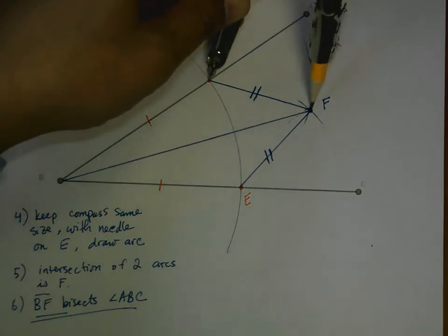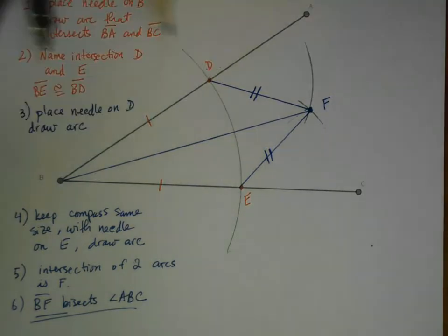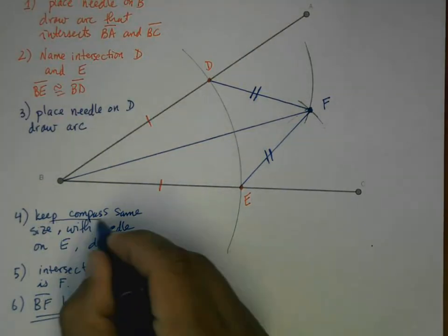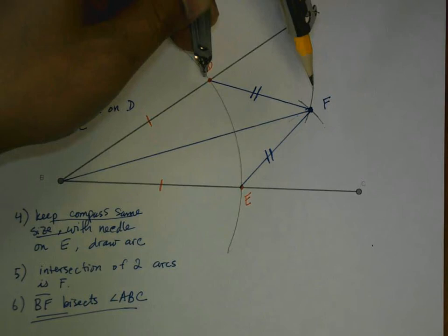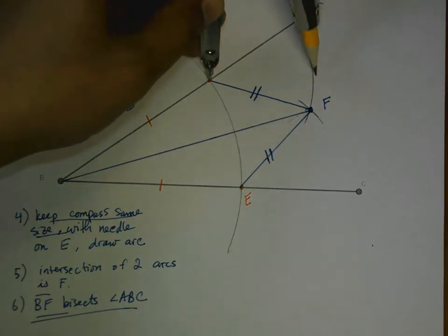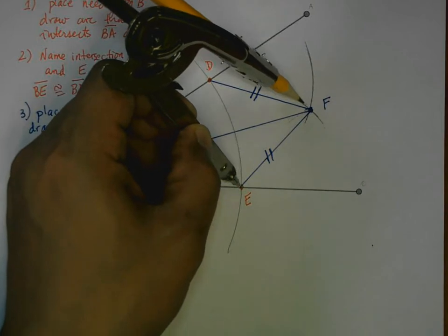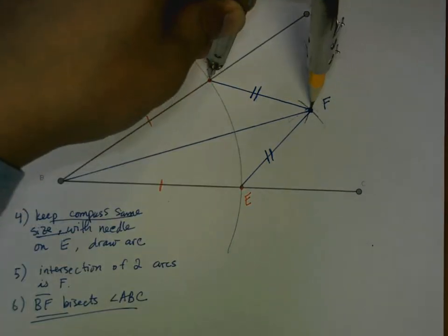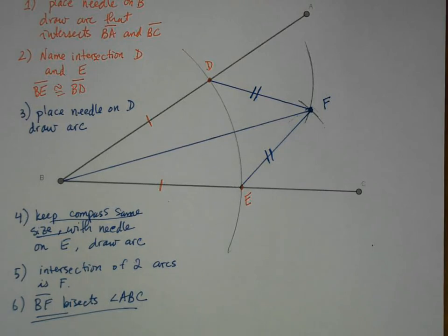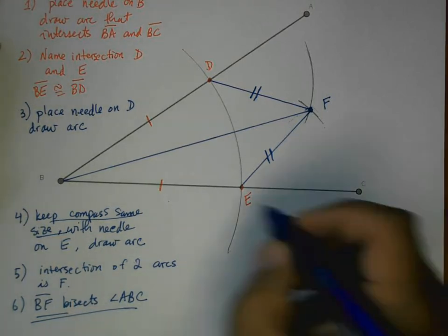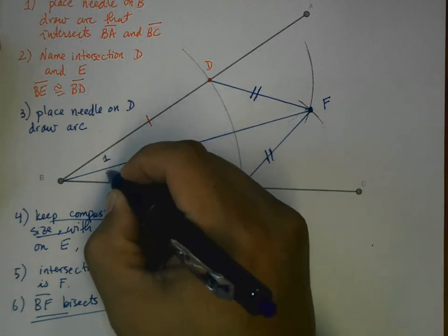Now one thing that we definitely know for sure is that DF and EF are congruent. Well why? Because we made it that way. We constructed them. Remember that when we did this, we made sure that keeping the compass the same size, from D we drew an arc, from E we drew an arc. Keeping the compass the same size, meaning that the segments that we produce have to be exactly congruent.